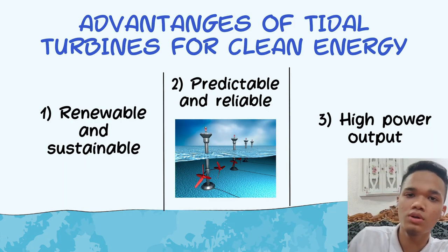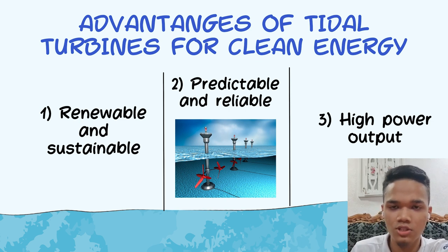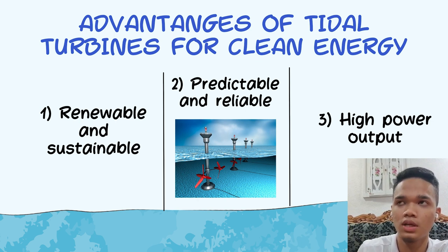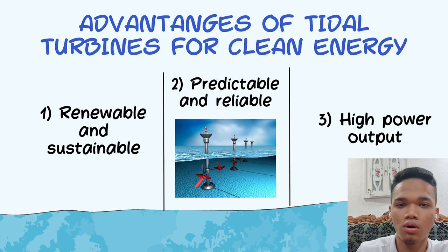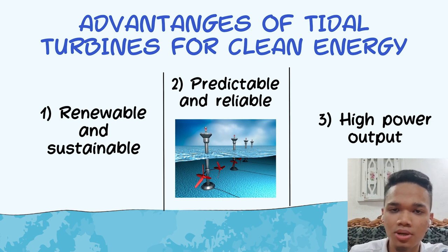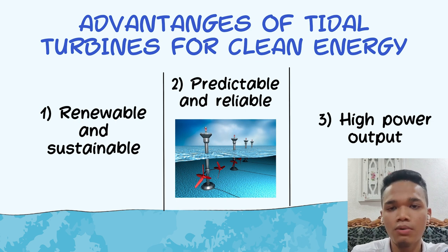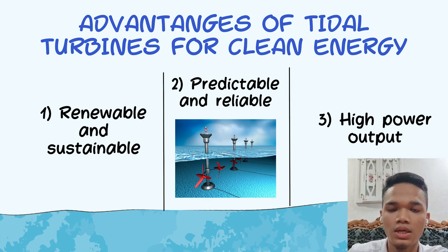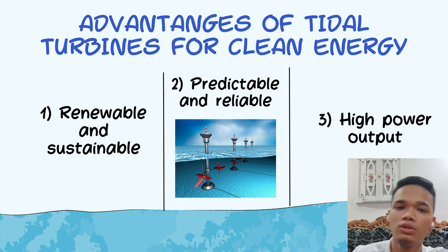For the advantages of tidal turbines: first point is renewable and sustainable. Tidal power uses the movement of water caused by the moon and the sun. It does not need any fuel or make any waste. It does not make the earth hotter or change the weather, and it can keep working for a long time regardless of weather conditions. Second point is predictable and reliable. Tidal power is easy to predict because it follows the moon and the sun, and it can give electricity all the time, unlike wind or solar power. It can also work with other types of power to meet the needs of people.